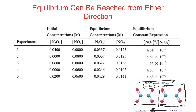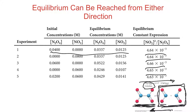And it does not matter which way you start. You could start with all of the nitrogen dioxide — all of the small molecules — and they will join together to form some of the larger molecule. As soon as you have enough of the large molecule, it's going to start breaking apart back into the small ones. You'll end up with the very same amounts. The same equilibrium constant will be reached no matter how much you start with or which direction you start from.